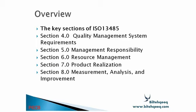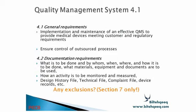The key sections of ISO 13485 are: Section 4 — quality management system requirements; Section 5 — management responsibility; Section 6 — resource management; Section 7 — product realization; and Section 8 — measurement, analysis and improvement. Now we will review these sections in detail.